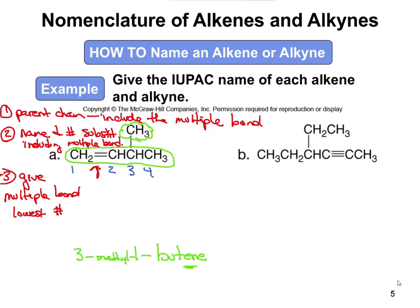For the one on the right, we need to find the parent chain, making sure we include the multiple bond. In this case, we're going to start closer to the multiple bond and draw it this way. So you have a CH3, the carbon-carbon triple bond, and a CH. Then the question is do we go up to that CH2-CH3, or do we go to the left to CH2-CH3? Since they're both the same — both an extra CH2-CH3 — it doesn't really matter, so I'm just going to keep going around this way.